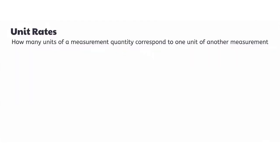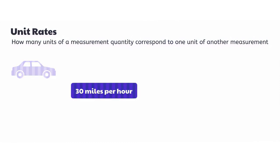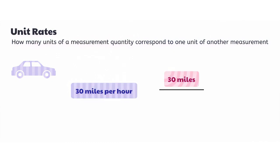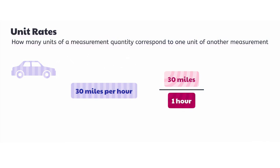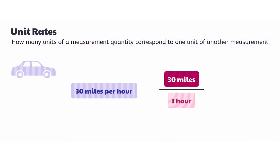Unit rates tell us how many units of a measurement quantity correspond to one unit of another measurement. For example, I could say that I drove 30 miles per hour, meaning I drove 30 miles every one hour. This tells us for each change of one in the independent variable, which is time in hours, how much the dependent variable will change. It is helpful to calculate a unit rate when graphing quantities that are proportional.